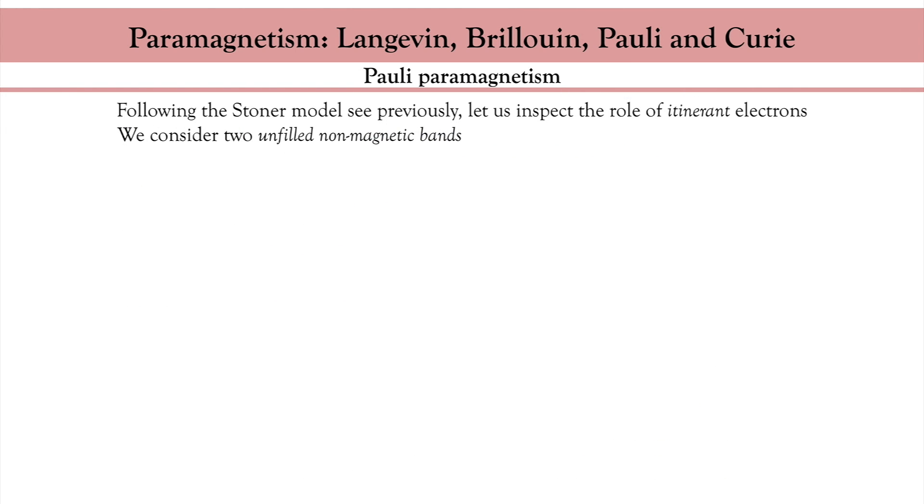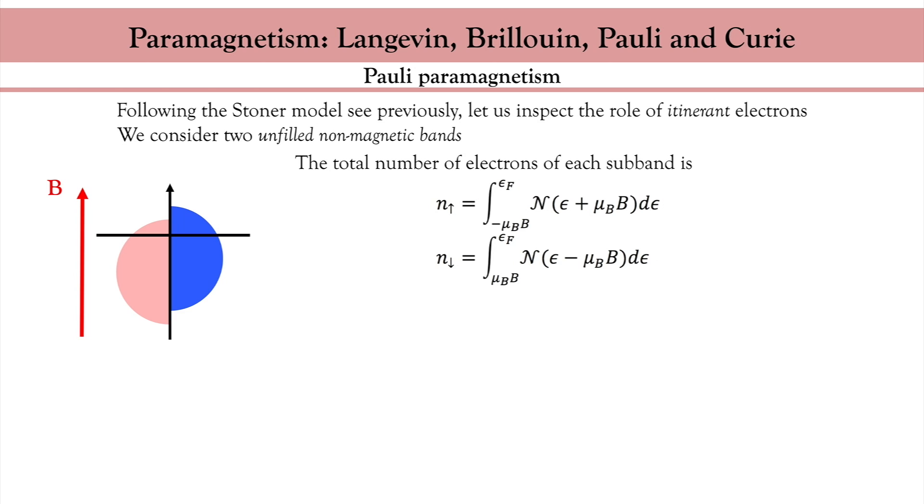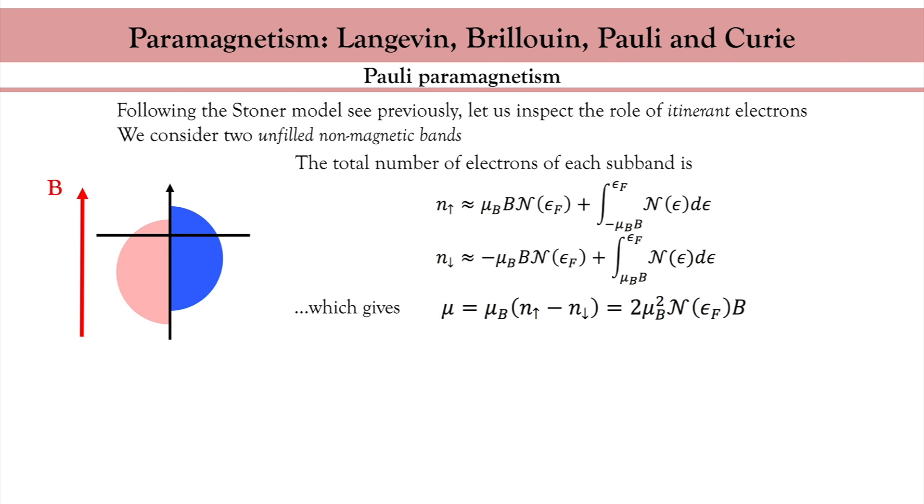Brillouin and Langevin paramagnetism apply to a collection of localized magnetic moments. There is another contribution to paramagnetism that is particularly important in metals. Imagine that you take a non-magnetic metal with a simple density of states. When I apply a magnetic field to the system, the density of states of majority and minority spins splits under the Zeeman effect. Which means that I will have more magnetic moments aligned along the magnetic field than magnetic moments against the magnetic field. In other words, the number of spins can be written this way. I can expand each spin species as a function of the magnetic field, and obtain the magnetic moment, which is again positive. This paramagnetism is called Pauli paramagnetism.